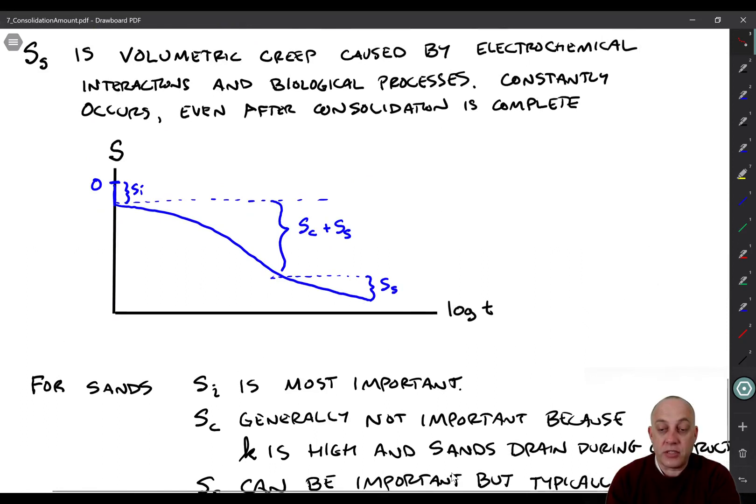Okay, let's move on now to secondary compression. So this is a concept that's a little bit complicated. And we're not even totally sure exactly what causes secondary compression a lot of the time. It's something that's been observed. We can measure it in the laboratory and then account for it in the field. But basically you can think of secondary compression as being volumetric creep. And so creep is just some deformation that happens slowly over time. And it's caused by electrochemical interactions and biological processes in the pore space of the soil. Maybe other factors are at play as well. And it constantly occurs even after consolidation has basically completed.